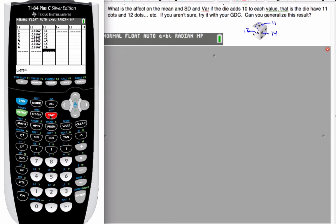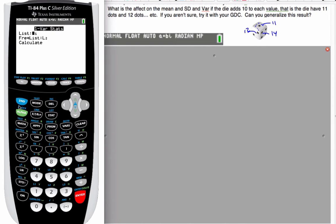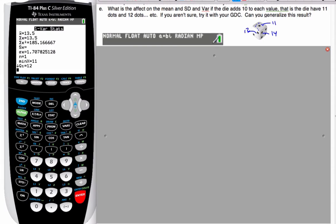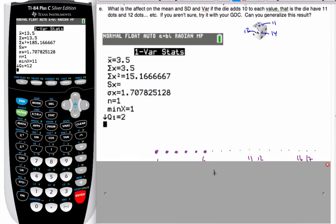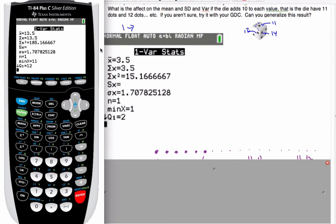And if I go now to stat and I'm going to calculate one variable statistics, my list is actually L3 now, my frequency of this is still L2. And if I calculate it I end up with these values here. And if I look at this is for the six sided regular one to six die.